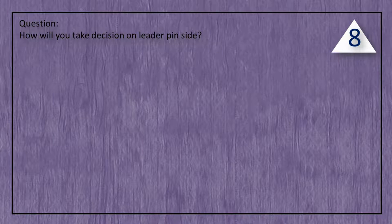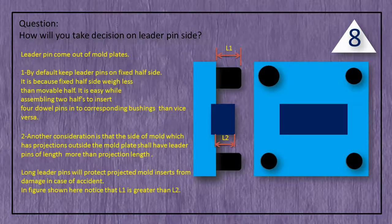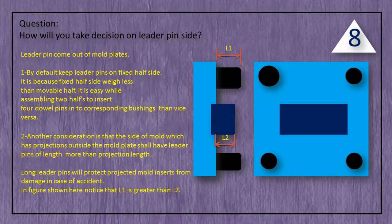Question: How will you take a decision on leader pin side? Answer: Leader pins come out of mold plates. By default, keep leader pins on the fixed half side, because the fixed half side weighs less than the moveable half. It is easier, while assembling two halves, to insert four leader pins into corresponding bushings than vice versa. Another consideration is that the side of the mold which has projections outside the mold plate shall have leader pins of length more than the projection length. Long leader pins will protect projected mold inserts from damage in case of accident.